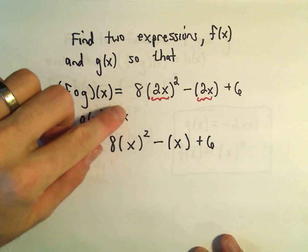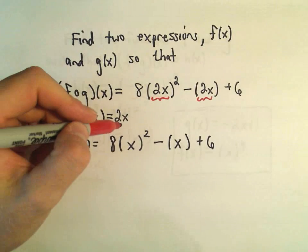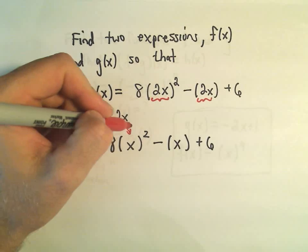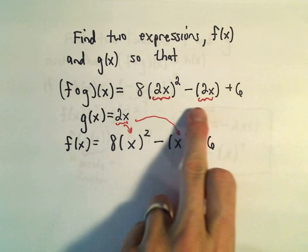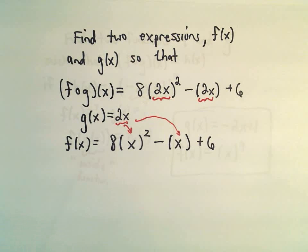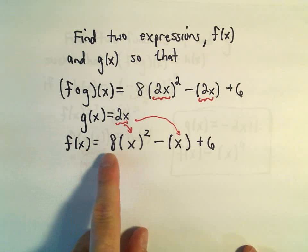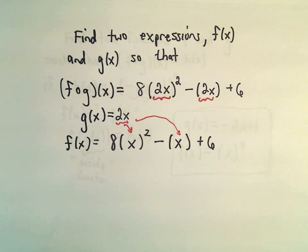notice if we replaced, if we plugged the 2x in everywhere that we had an x, notice we would get this exact function back that we have up here. So I claim that g(x) = 2x, and if we use f(x) as 8x² - x + 6, those would be two functions that work.